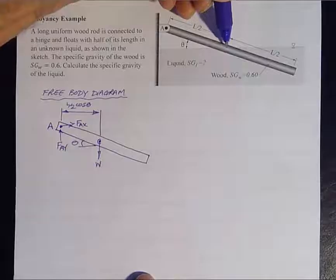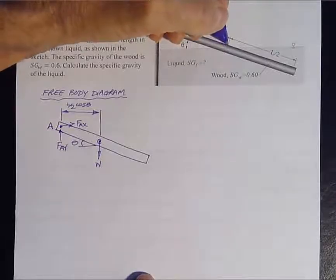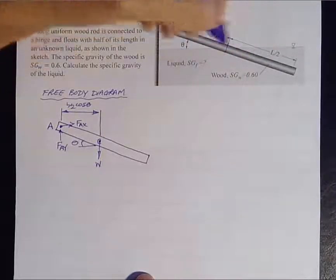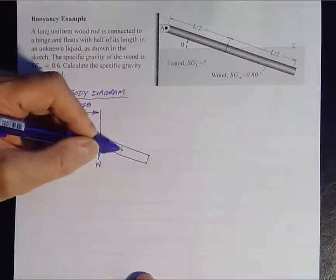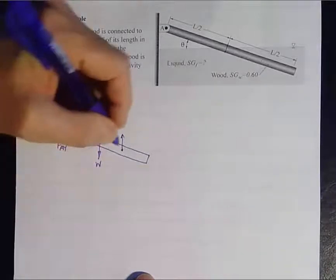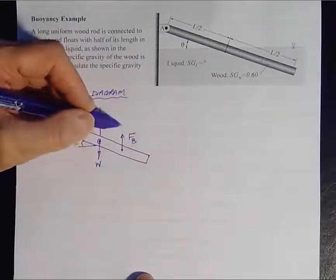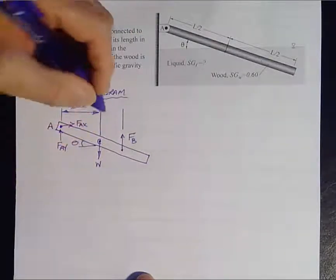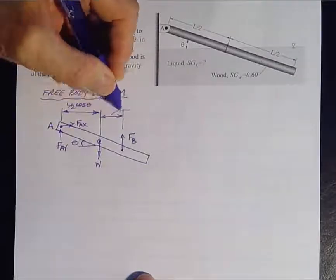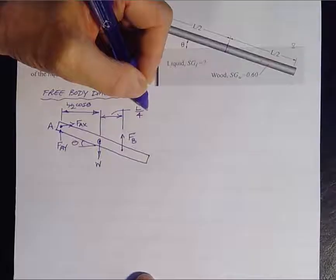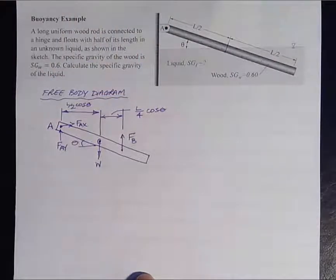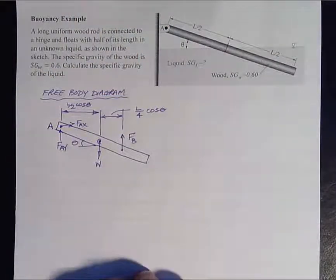Now the buoyancy force acts at the center of the displaced volume. So half of this rod here is below the water. So it's going to act at the center of the displaced volume, which would be right there. It would act upwards. Here's the buoyancy force. And this distance here is going to be L upon 4 cos theta. So that completes our free body diagram.